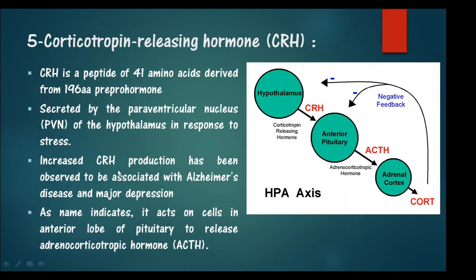Increased CRH production has also been observed to be associated with Alzheimer's disease as well as major depression. As the name indicates, CRH acts on cells in the anterior lobe of the pituitary to release adrenocorticotropic hormone.